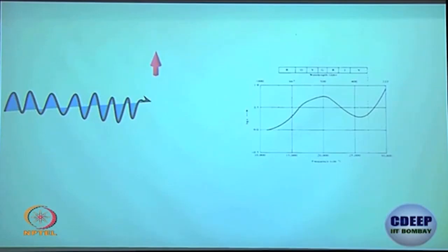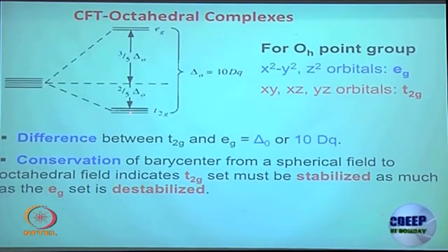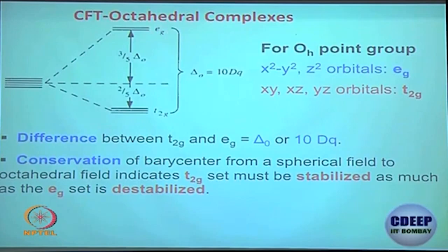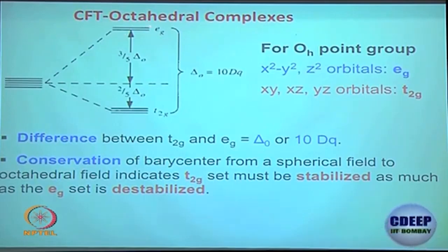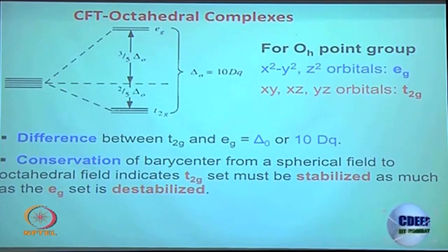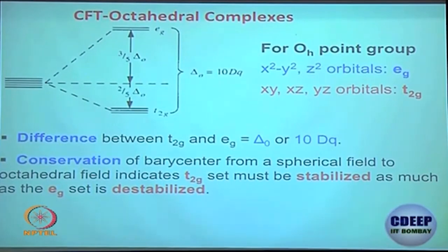For a D¹ electronic configuration, one electron sits in T₂g (T₂g¹). The only possible transition is upward to E_g. If E_g is further split, the electron can go to two different levels — d_x²-y² or d_z² — giving two different peaks in the spectrum. The intensity depends on symmetry considerations, but you can understand where the spectral transitions originate.